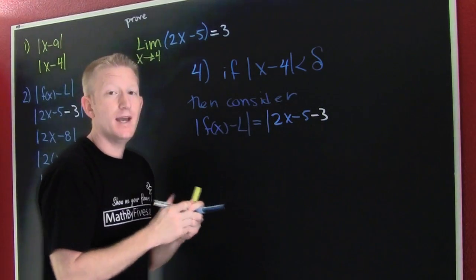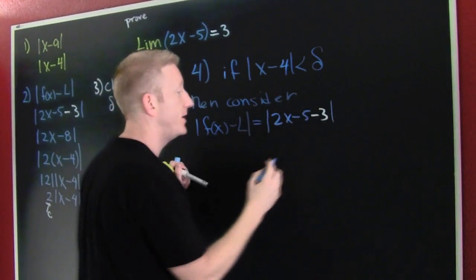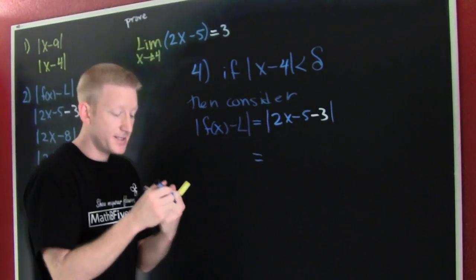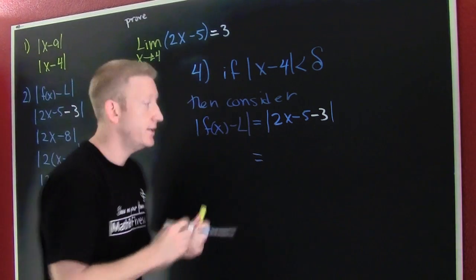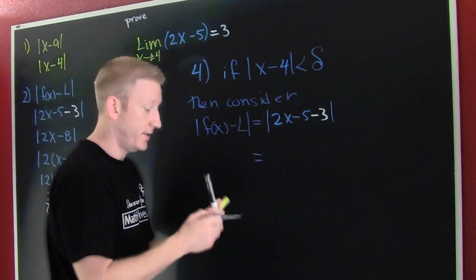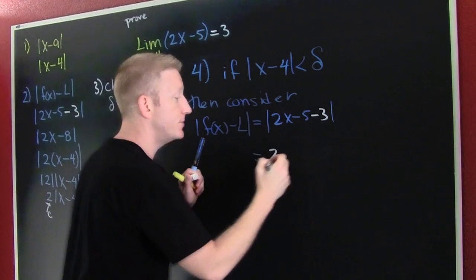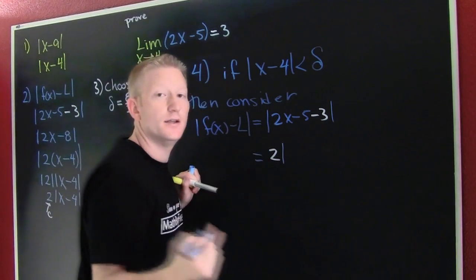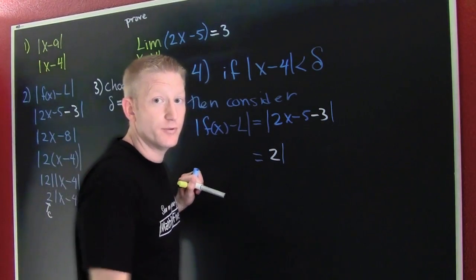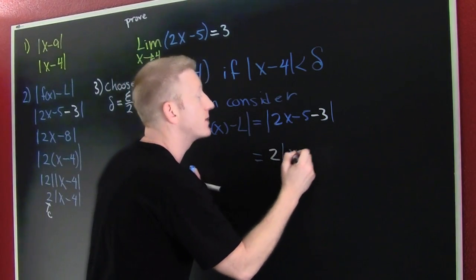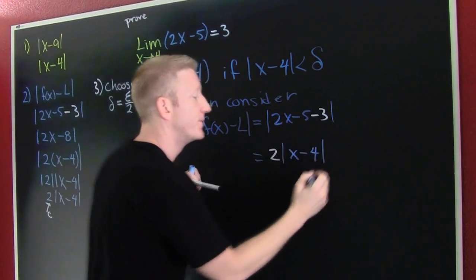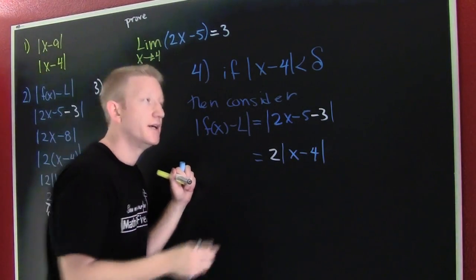And we absolutely want to write this step. In the next part you can say that this is equal to - steps omitted - 2 times the absolute value. You should include your scratch work in your proof, but just call it scratch. X minus 4, sure.